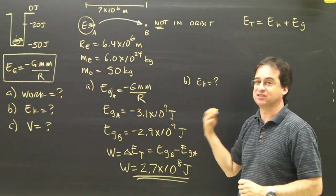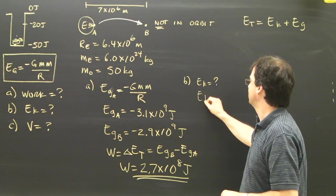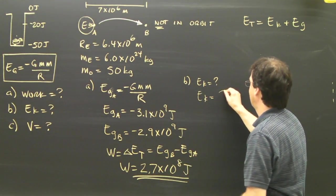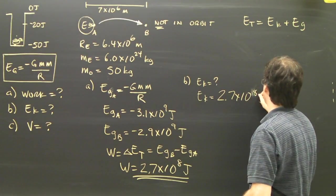and fall back to Earth. Because remember, it's not in orbit. You have to look at some other part of the video to find that. So the kinetic energy is easy. That's how much I have to add. 2.7 times 10 to the 8 joules.